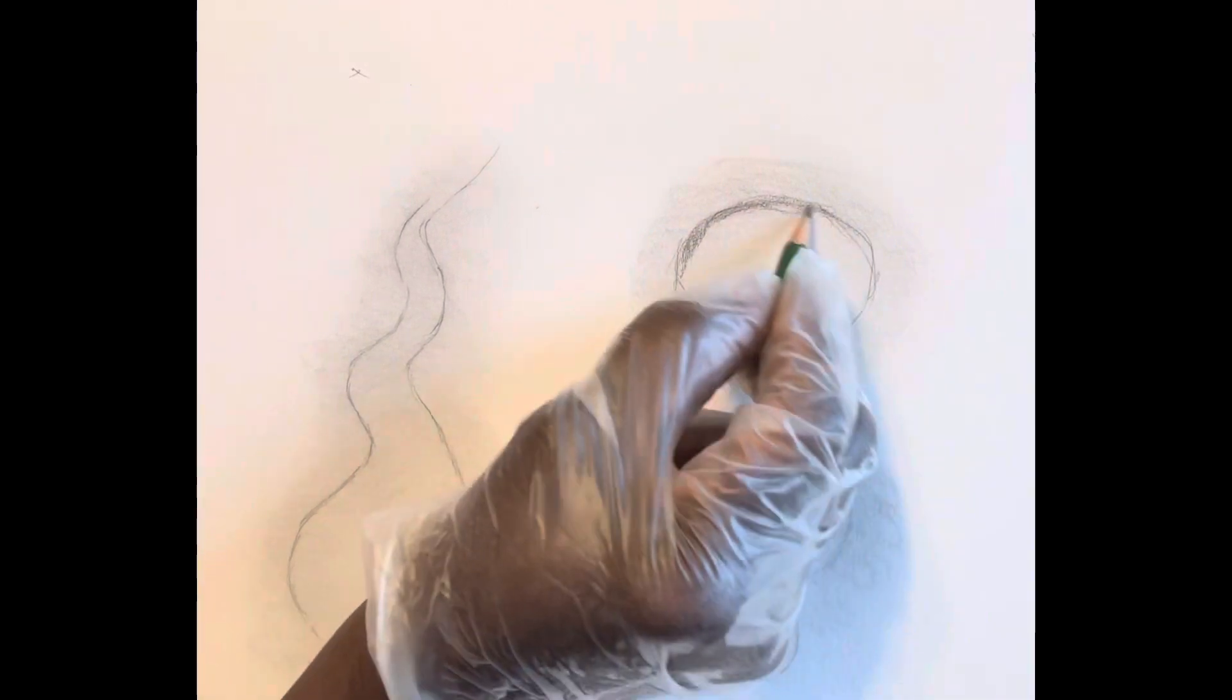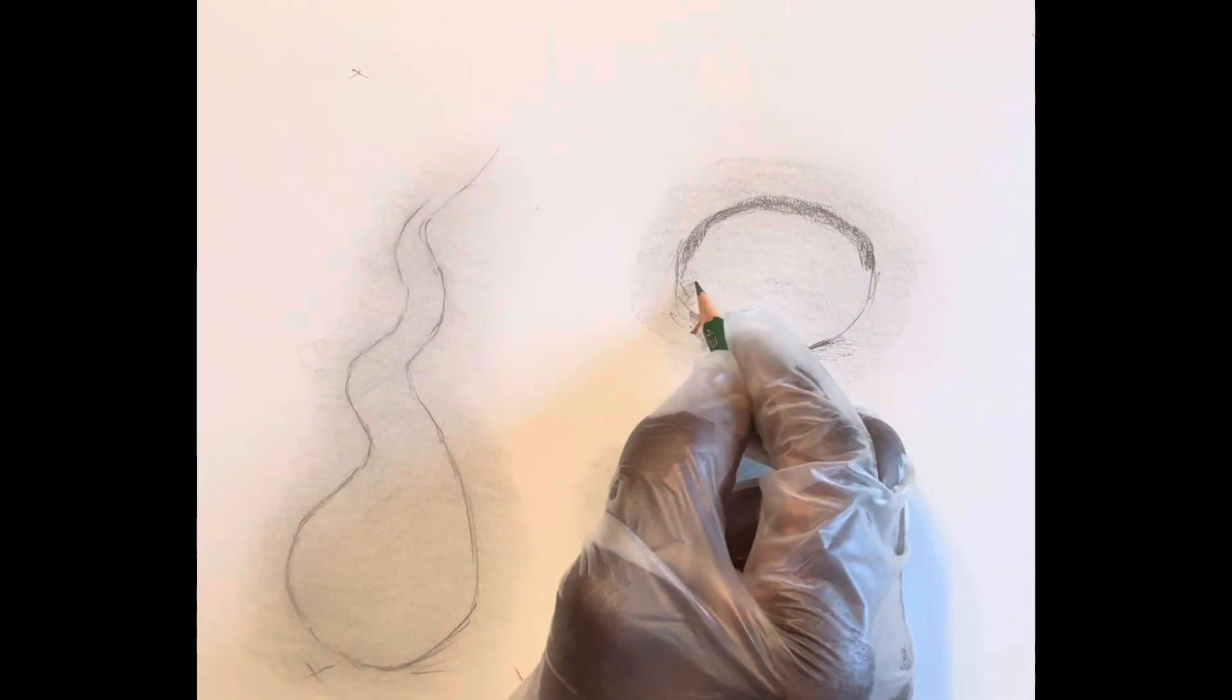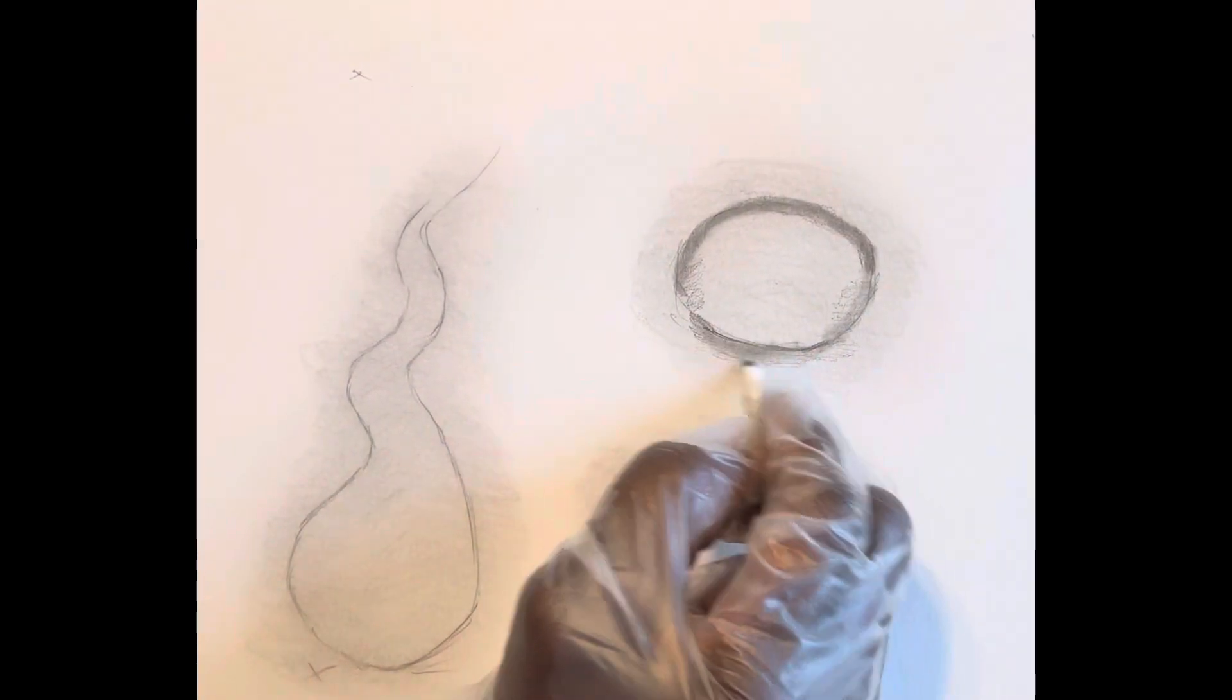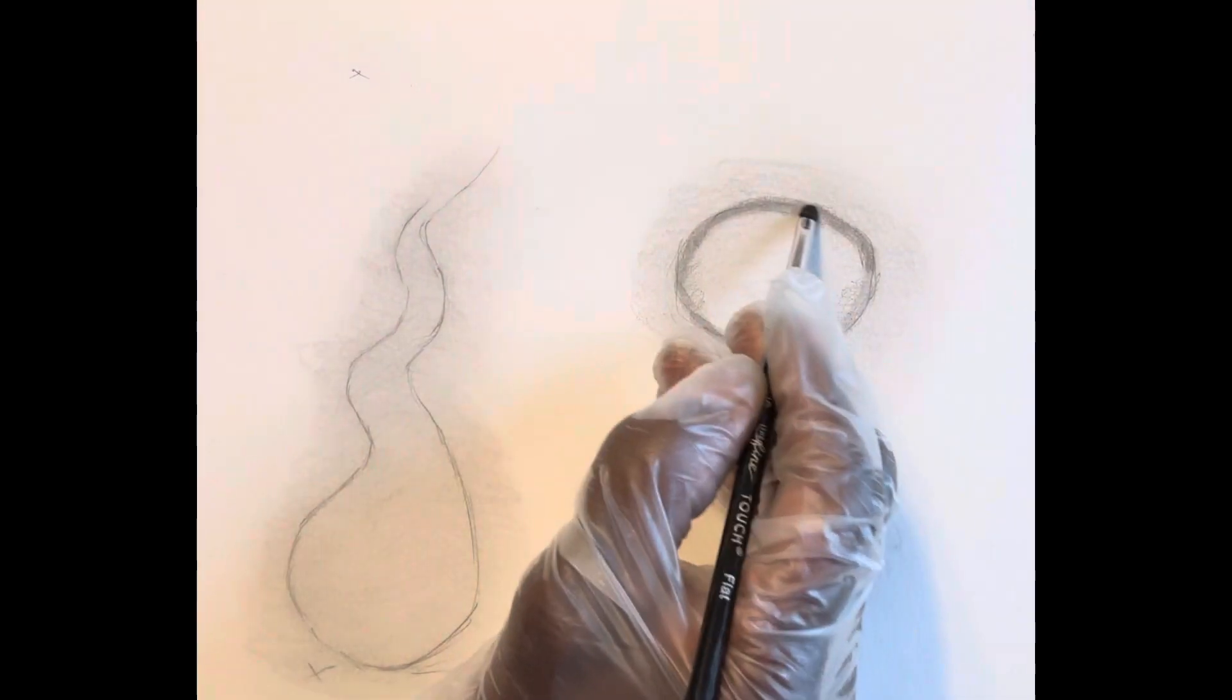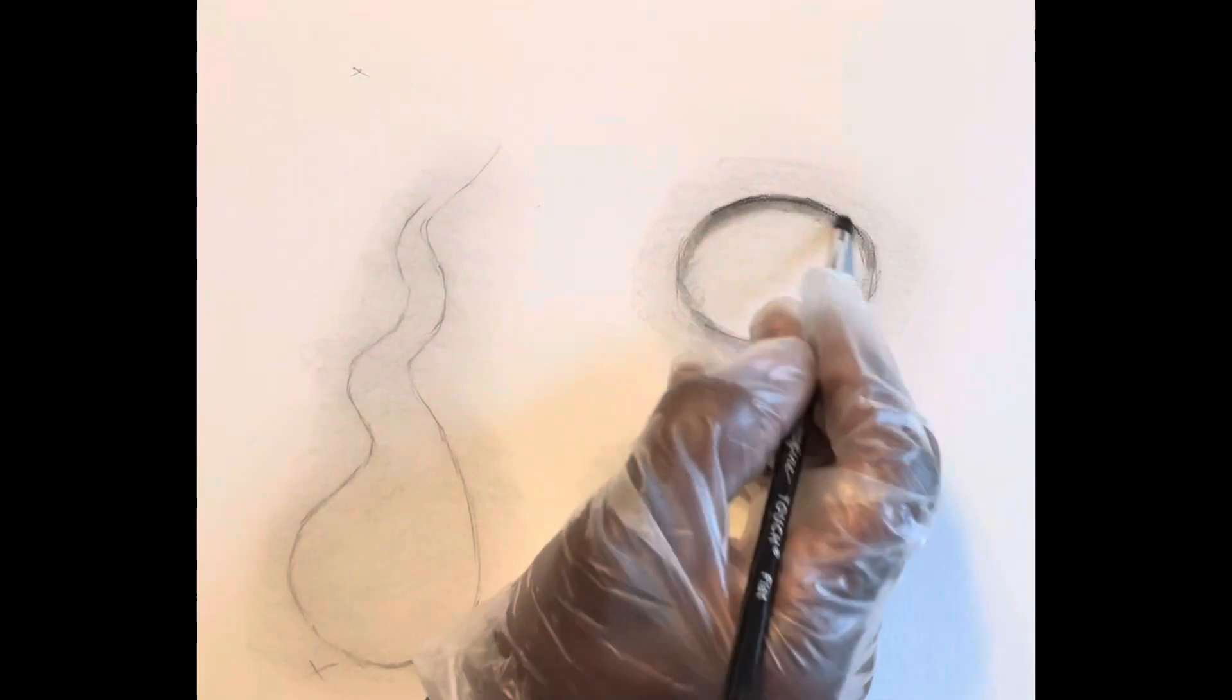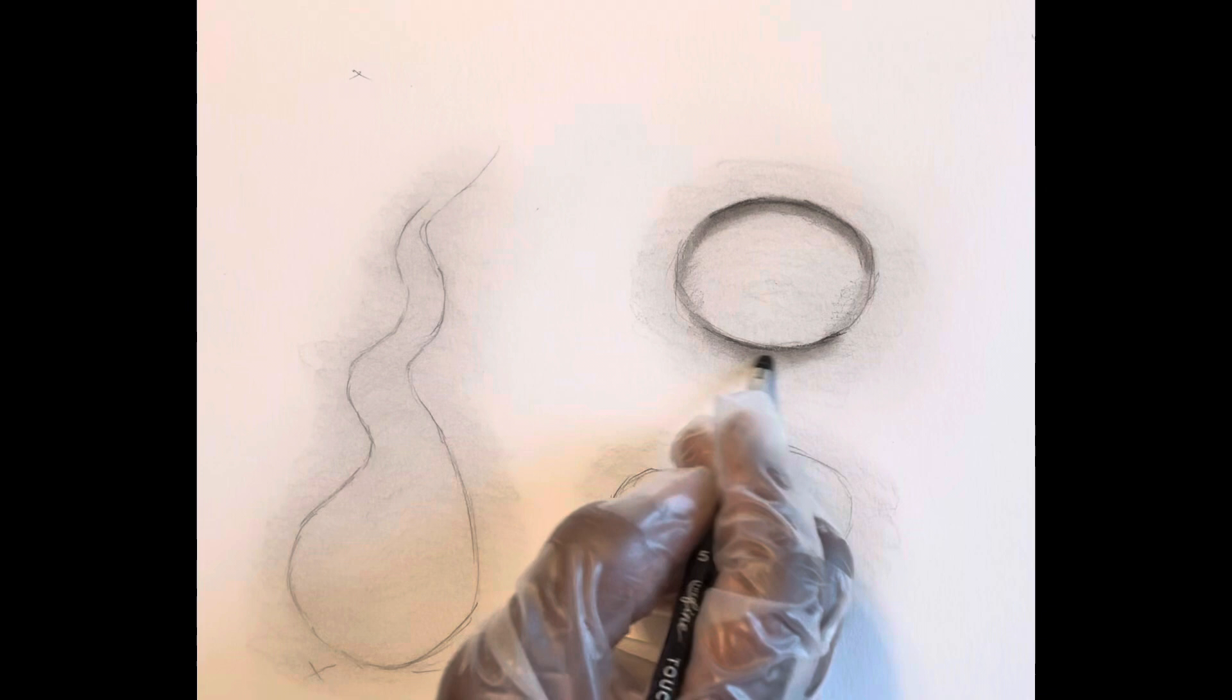Now I'm going in with a darker pencil because I'm going to try to capture those mid-tones. Always keep in mind when you're shading that you're looking for darks, mid-tones, lights, and highlights. So right now I'm doing those mid-tones, and then I go in with a charcoal pencil and get the darkest ones.